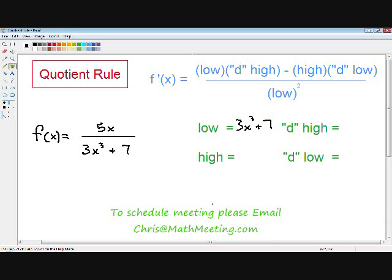Our high is our numerator, which is just 5x. Our d high is the derivative of our numerator, so the derivative of 5x is just 5. Our d low is the derivative of the denominator, so the derivative of 3x cubed plus 7 is just 9x squared.